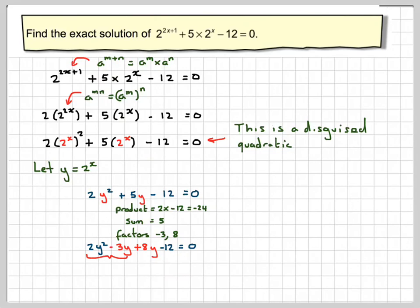So we now split the middle term up into minus 3y plus 8y, and we factorize by grouping. Common factor here of y. What's left is 2y minus 3, and there's a common factor here of 4. What's left here is 2y minus 3 is equal to 0. So we've got 2y minus 3 brackets y plus 4 is equal to 0.